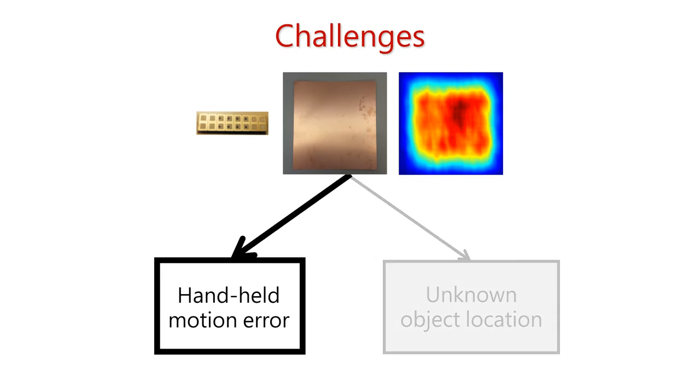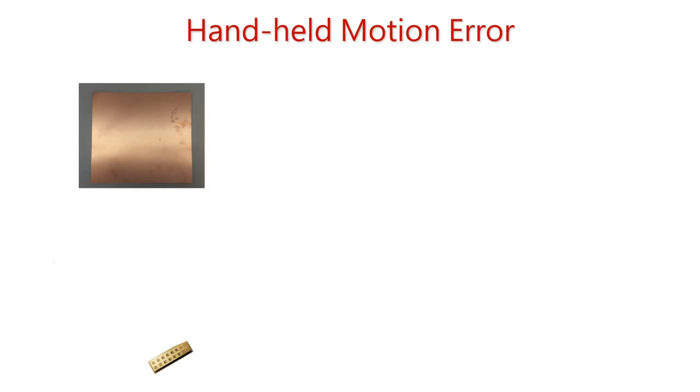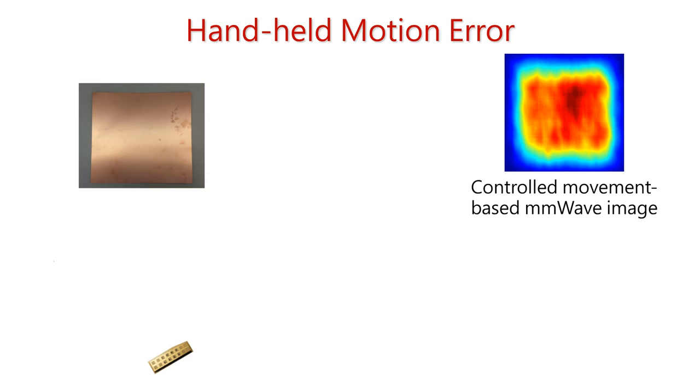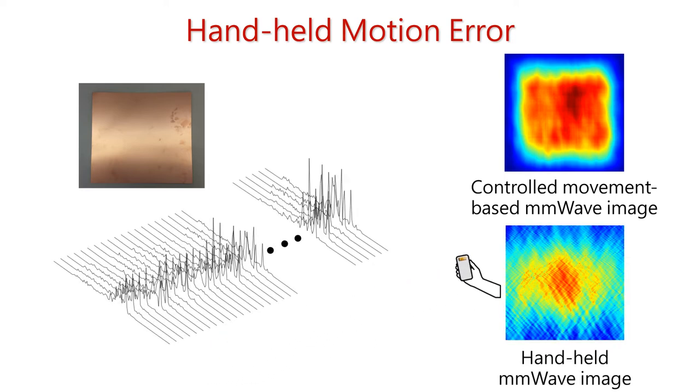So why is handheld motion error a challenge to millimeter wave imaging? Recall that a millimeter wave imaging system needs to move the antenna precisely and they use a robotic controller. This is the kind of image that we get when the movement is controlled and precise. So what if we replace the robotic controller using a human hand? We get this kind of image. So what's going on here? Why is the image so distorted? As you can imagine that when you move the antenna using a human hand, the motion is not linear. This kind of nonlinear motion error can severely affect the imaging quality and degrade the quality to distort the image.